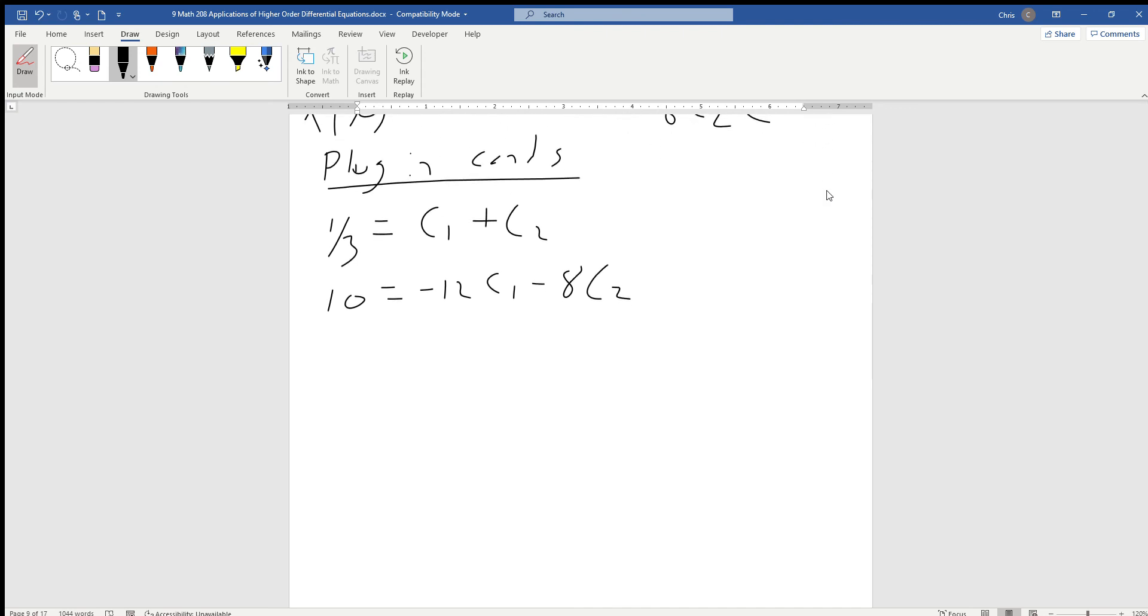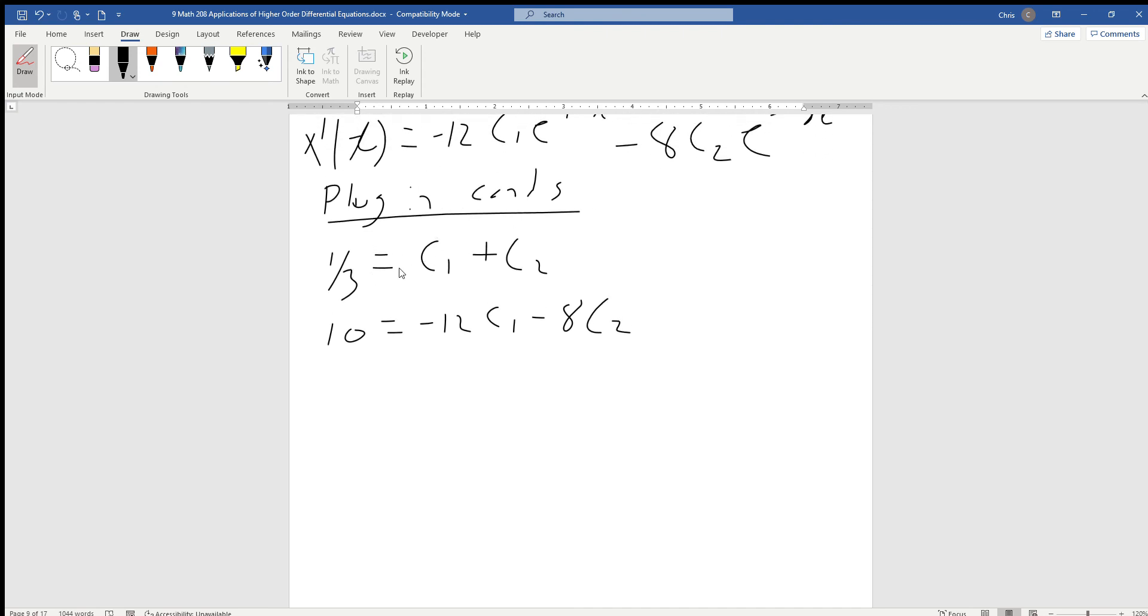We can multiply the first equation by 8 or even 12. Let's multiply by 12 since 12 thirds is nicer to work with than 10 thirds. We get 4 equals 12 c1 plus 12 c2, and 10 equals negative 12 c1 minus 8 c2. This works out really nicely. We get 14 equals 4 c2, divide by 4, and 7 halves equals c2.